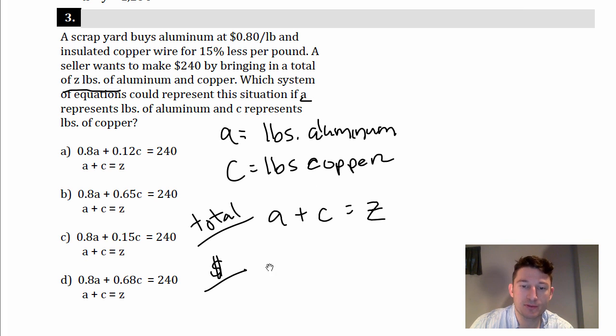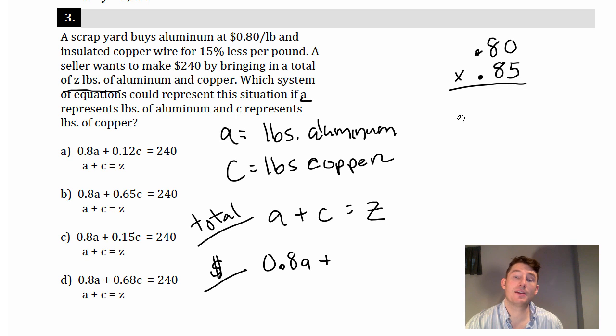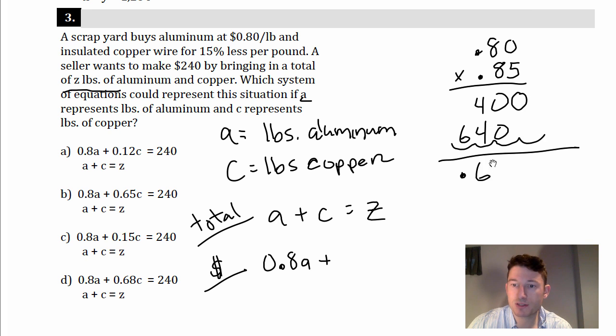All right, so in our price equation, aluminum is going for 80 cents per pound, so that's 0.8A, plus well, how much is copper going for? It's 15% less. So we've got to find 15% less of 0.8. Quick way to do that, I'll just write 0.80 times 0.85. So instead of doing 15% of 80, finding that number and minusing, I can just multiply by 0.85. So that's 0.68.